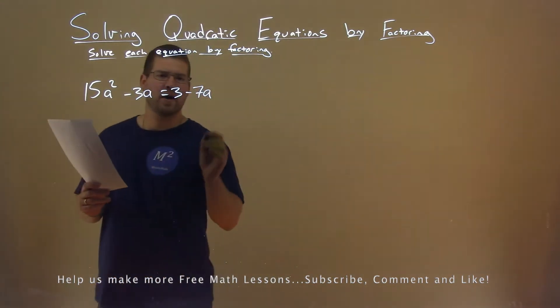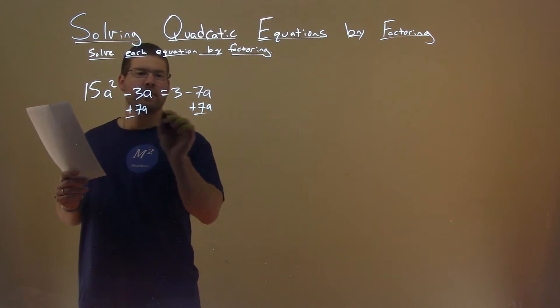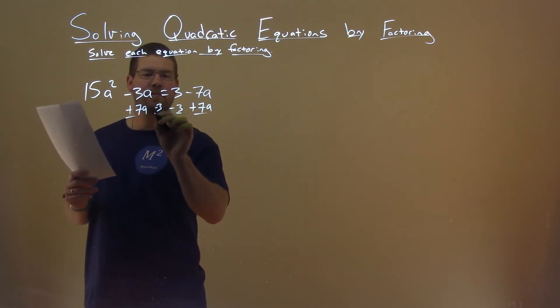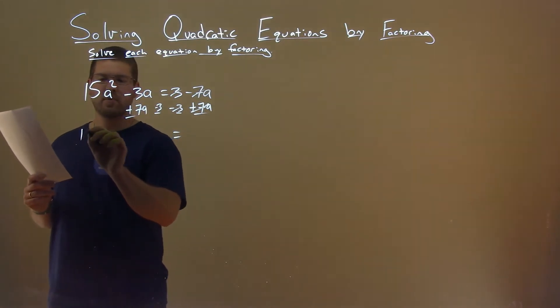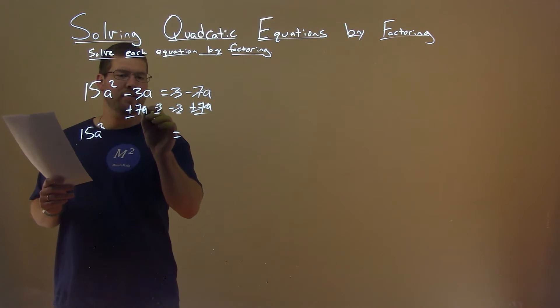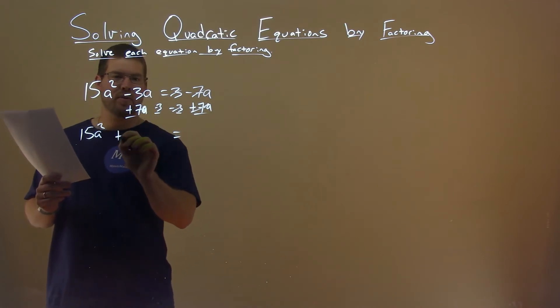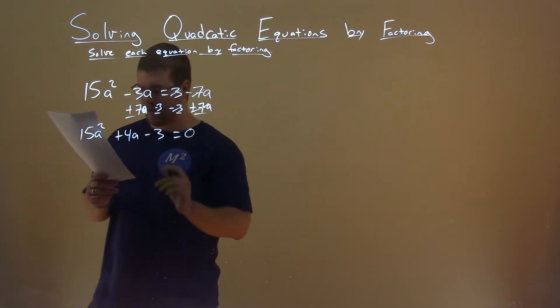Let's get everything over to the left-hand side. Let's add 7a to both sides, and let's subtract 3 from both sides. The right-hand side cancels, and we're left with 15a² on the left, -3a plus 7a, which is 4a, and then we have -3 here, and that's equal to 0.